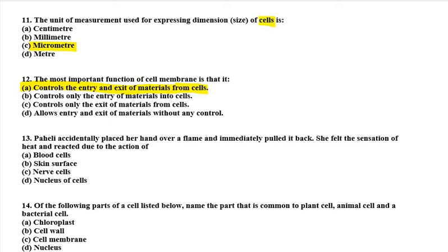Thirteenth question: Paheli accidentally placed her hand over a flame and immediately pulled it back. She felt the sensation of heat and reacted due to the action of blood cells, skin surface, nerve cells, or nucleus of cells. The right option is C — nerve cells. Nerve cells provide information to the brain, which is why they are responsible for the sensation and reaction.